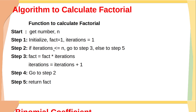In step 3, we calculate fact equal to fact multiplied by number of iterations. Initially, iterations is 1 and fact is 1, so it will be 1 × 1. Then we increment iterations: iterations equals iterations plus 1. In step 4, go back to step 2. Steps 2, 3, and 4 are repeated till iterations are less than or equal to n.